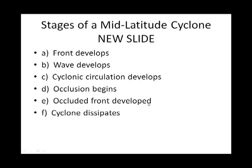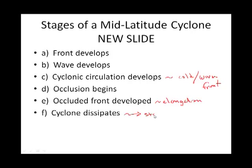This new slide summarizes the stages from the textbook captions as a mid-latitude cyclone matures. A: stationary front develops. B: a wave forms within that stationary front. C: cyclonic circulation develops, breaking out into a cold and warm front. D: beginning of the occlusion — an occluded front forms. E: the occluded front becomes fully developed — elongation from the central low. F: the cyclone dissipates, and often returns to just a stationary front. It kind of comes full circle.